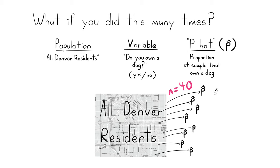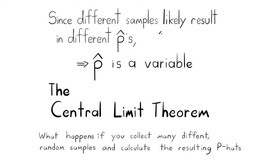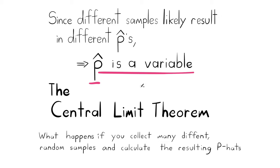We wouldn't get the same value every time — we'd get different sample proportions. Since different samples give us different P-hats, we can consider P-hat a variable. P-hat varies; it's not always the same. Just like the color of a car or the height of a person is a variable, our sample proportion is also a variable.